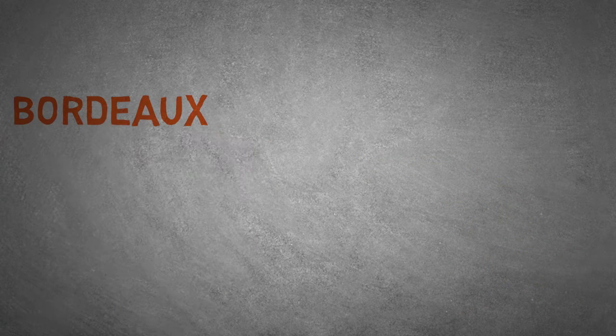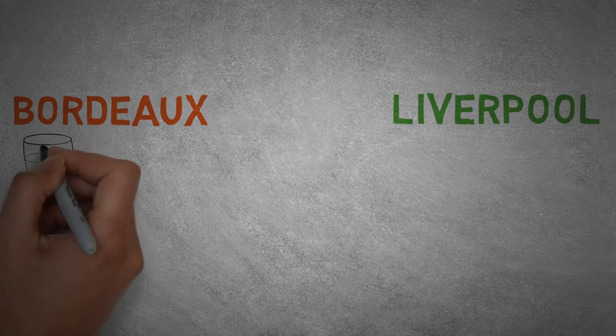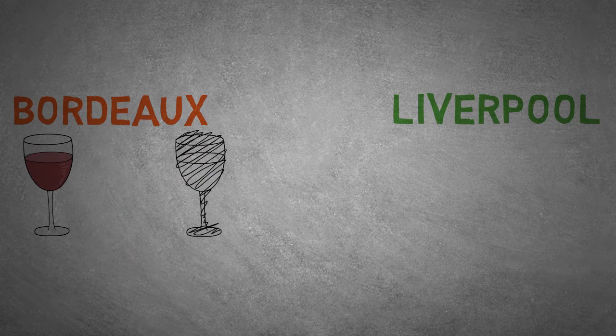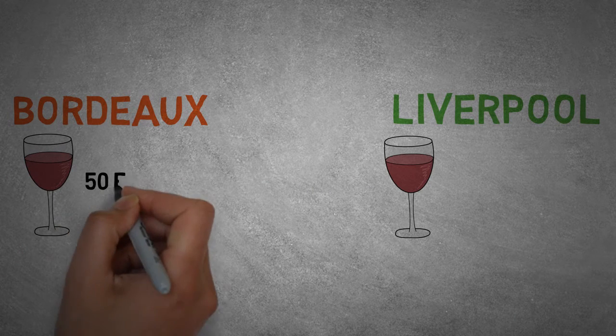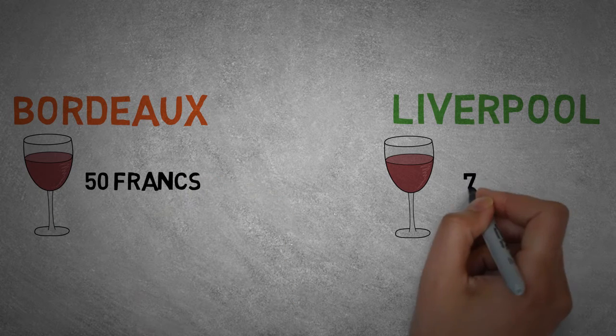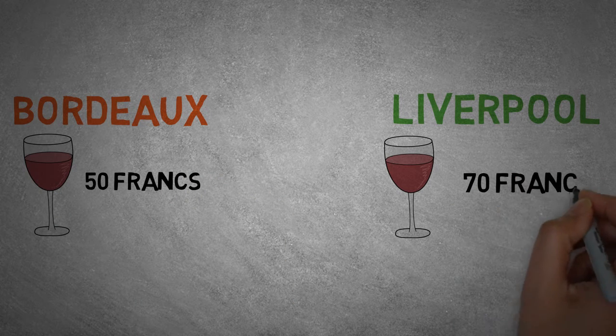So, Bastiat said, I was at Bordeaux, I had a cask of wine which was worth 50 francs. I sent it to Liverpool, and the custom house noted in its records an export of 50 francs. At Liverpool, the wine was sold for 70 francs.